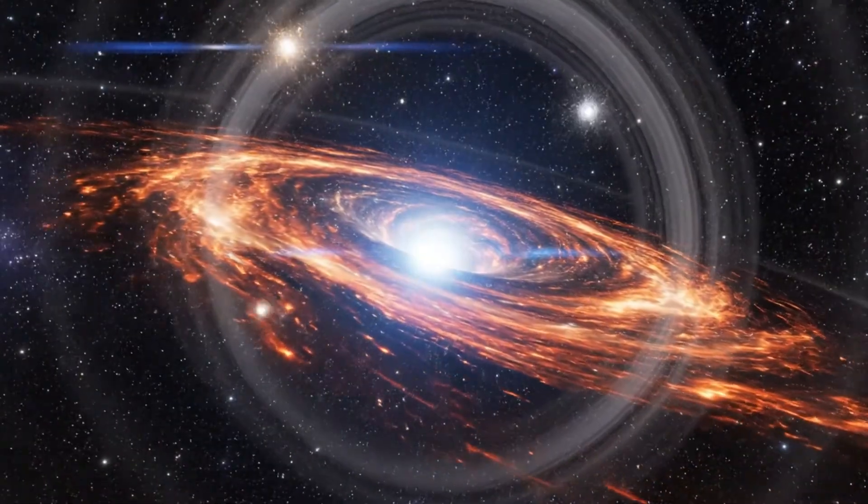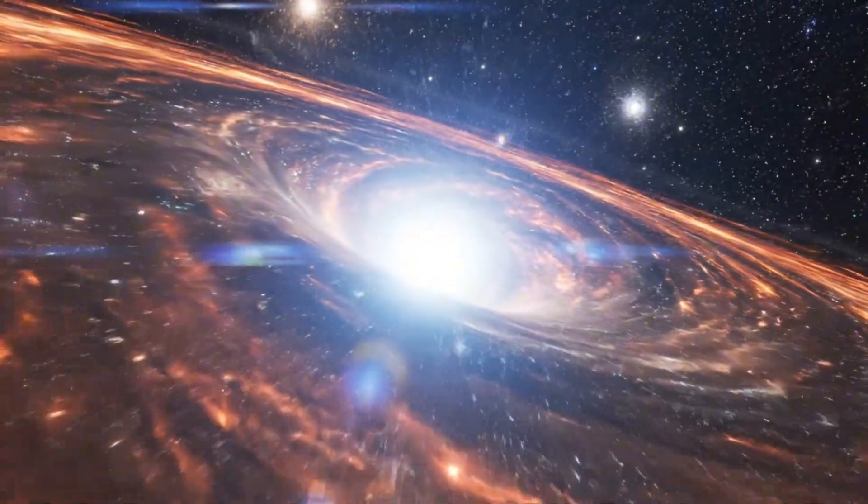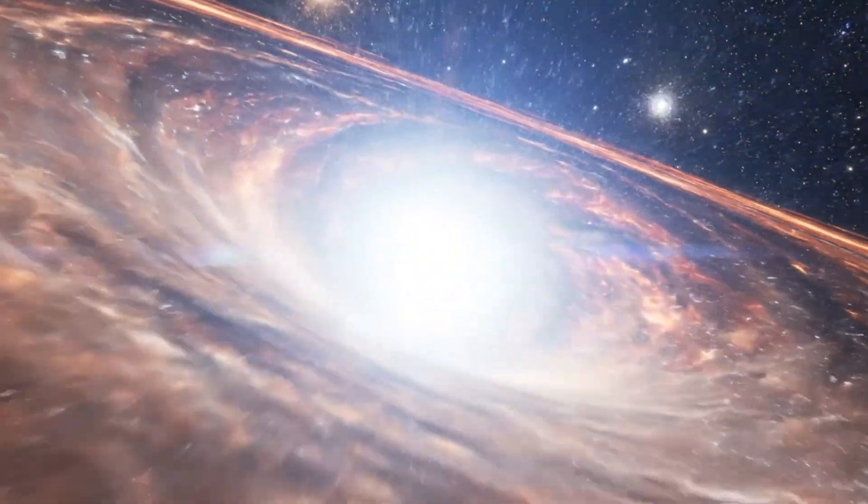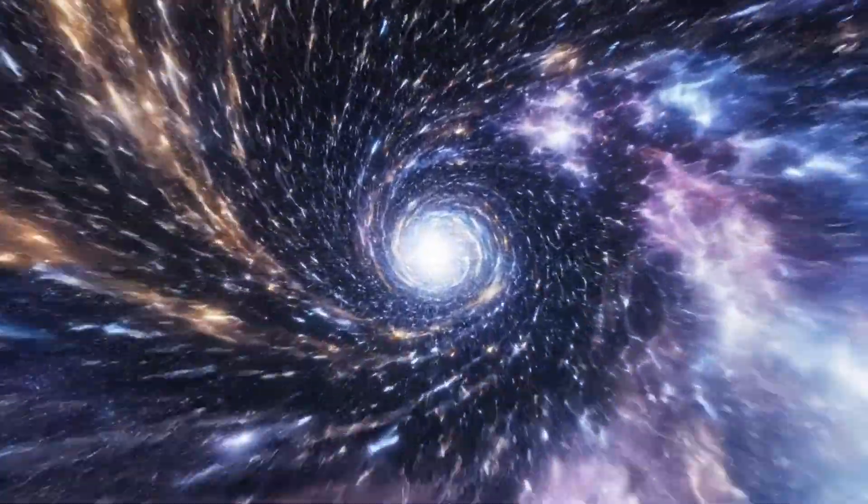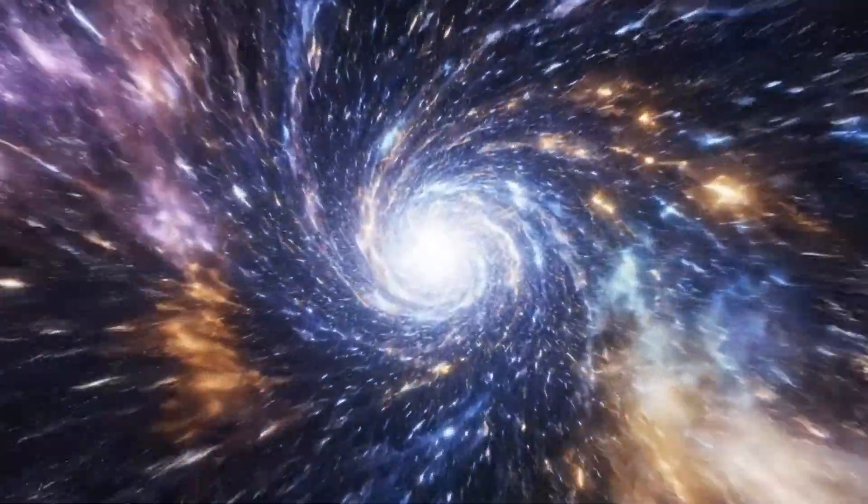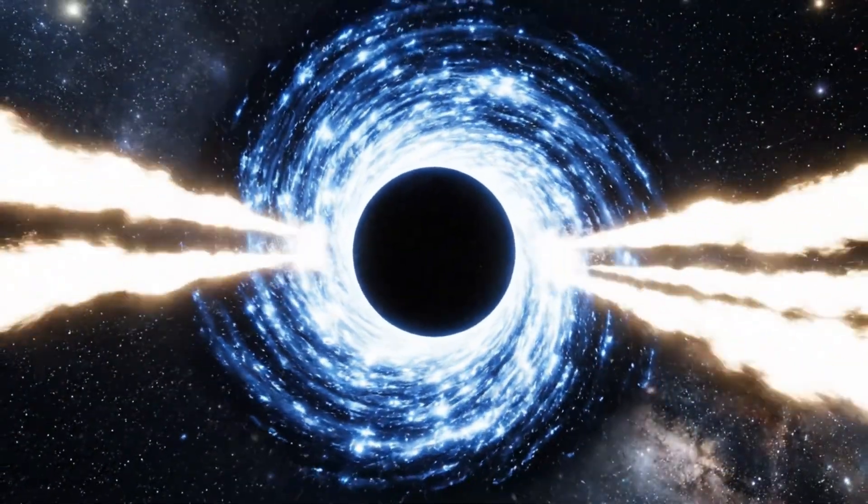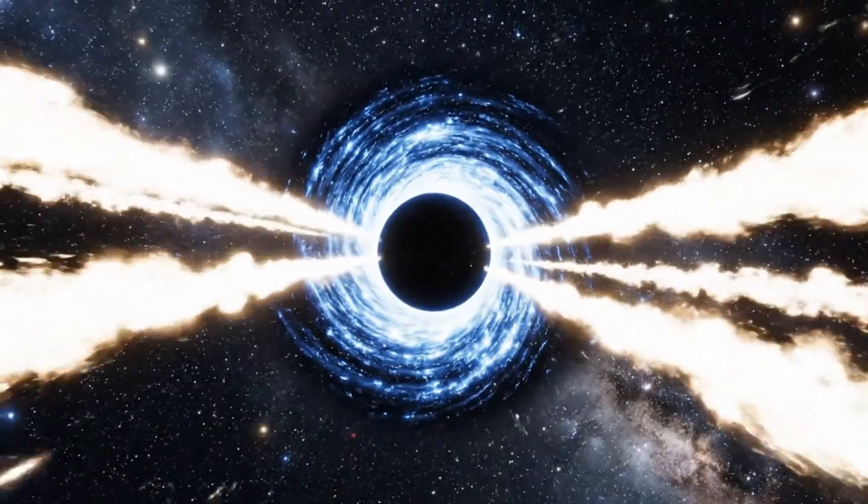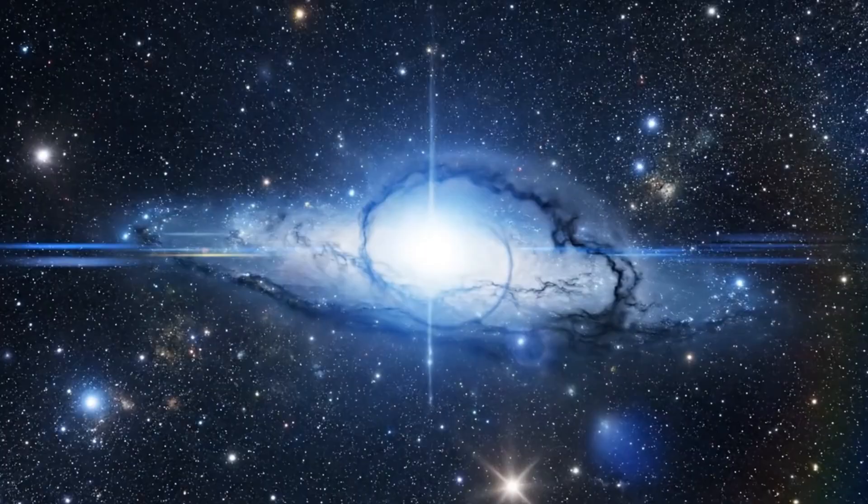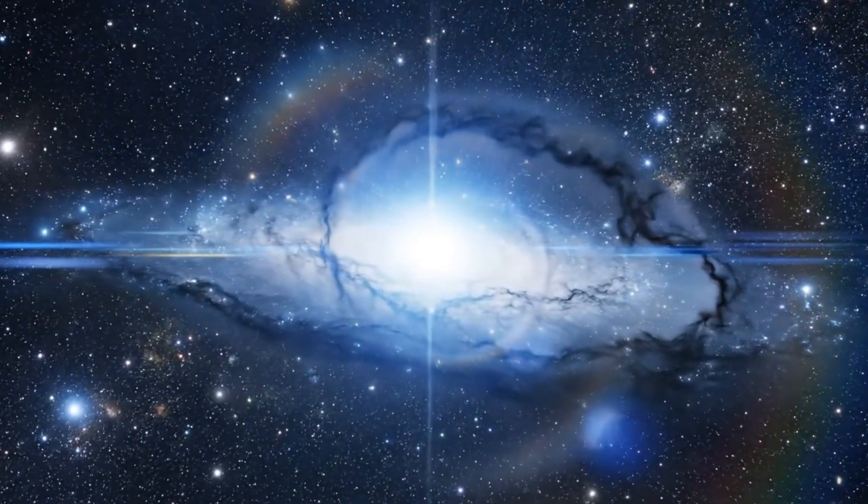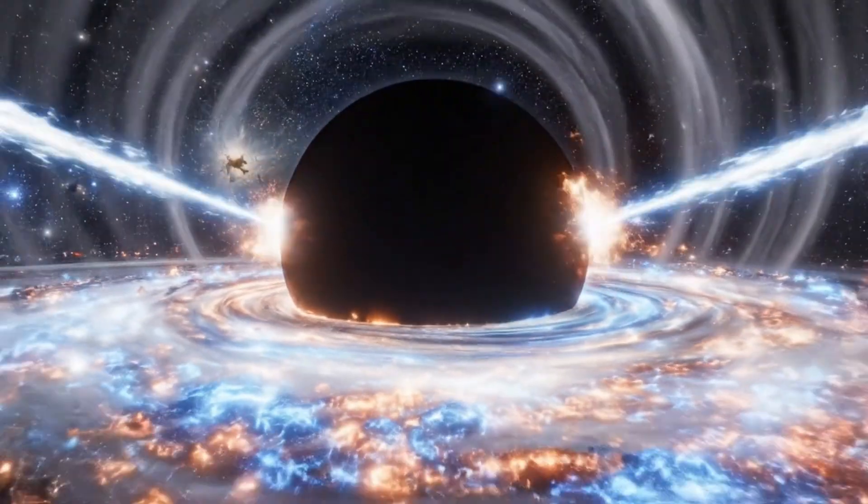If TON 618 sits so impossibly far away, then how are we able to see something that produces no light of its own? A black hole is pure darkness, yet everything that falls toward it becomes so bright it seems to burn through space itself. The gas spiraling into TON 618 is crushed and heated through violent friction, reaching temperatures of tens of thousands of degrees until it glows across every wavelength, from deep radio hums to visible light and all the way up to deadly x-rays and gamma rays.